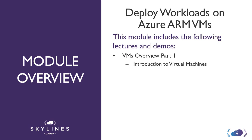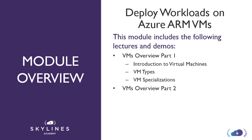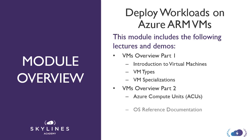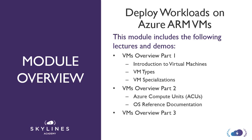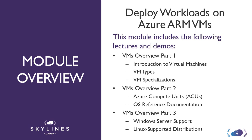Part 1 includes introduction to virtual machines, VM types, and VM specializations. Then we have part 2, which includes Azure compute units so you can learn how to size up your VMs, as well as OS reference documentation. Then we move on to VMs part 3, which includes all the Windows Server support and Linux-supported distributions that you need to know about for the exam.